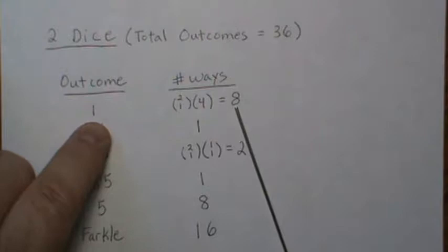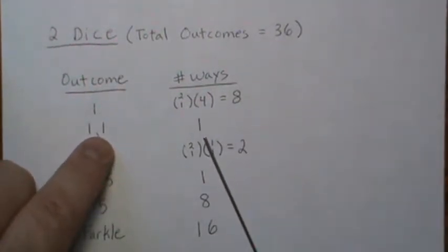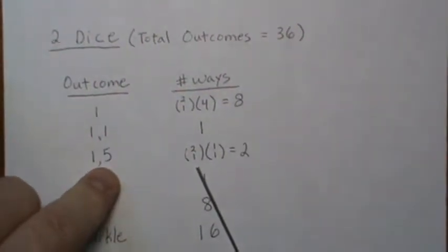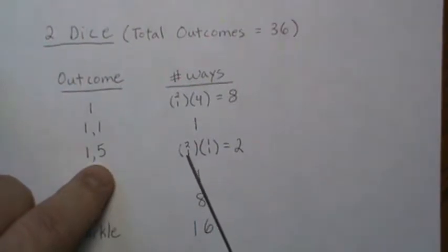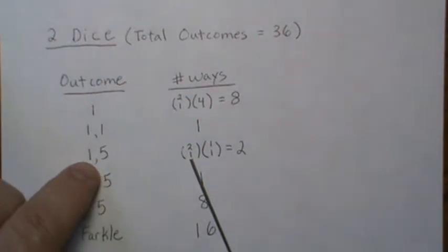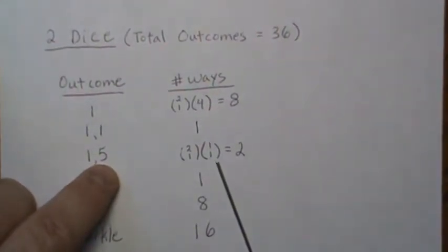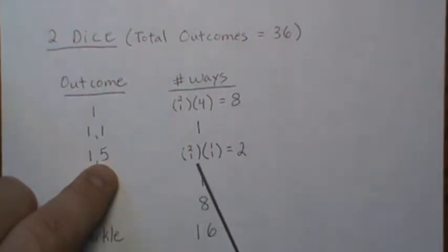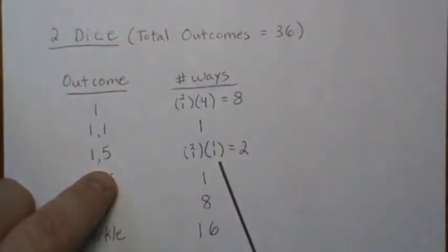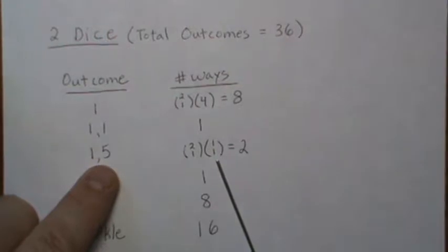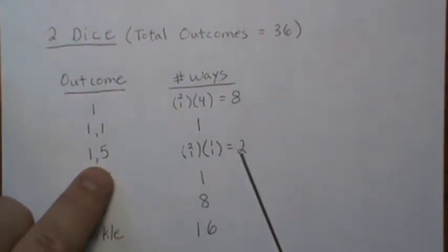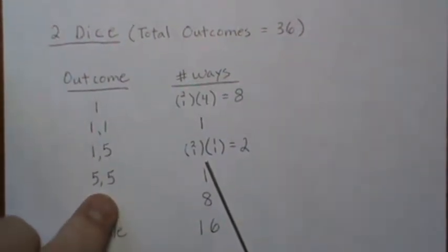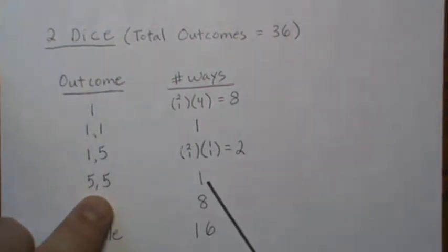So there are eight possible ways to roll exactly one one. To roll a one and a one, there's only one way out of the 36 — you have to have a one on both dice. To roll a one and a five: of the two dice, pick one, there's one way to roll a one, and of the one die left, pick one, there's one way to roll a five, so it's two times one equals two. I'm assuming you're familiar with combinatorics and permutation notation. A five and a five is the same as a one and a one, so there's one. To roll exactly one five is the same as to roll exactly one one, so there's eight.